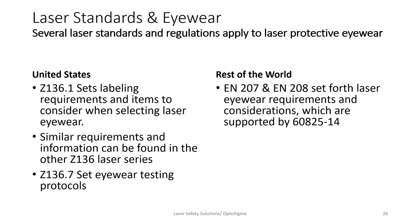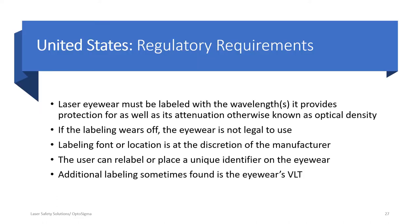Z136.7 is the eyewear standard that gives protocols for testing laser eyewear and has a wealth of information. In the rest of the world there is EN-207 and EN-208. In the United States, laser eyewear must be labeled with the wavelength it provides protection for as well as its attenuation — OD. If the labeling wears off, the eyewear is illegal to use, even if you have eight other identical pairs. Any pair with worn-off labeling, if found mixed among your other eyewear, will result in a citation.